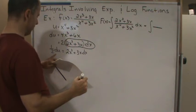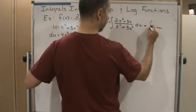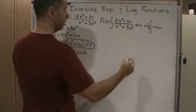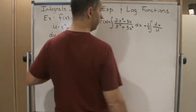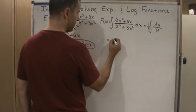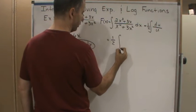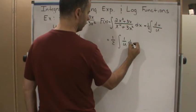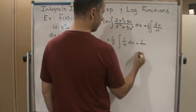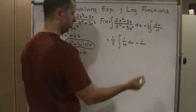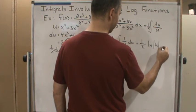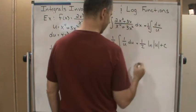And my top becomes 1 half du, so I'm going to have a half out here. And I get du over u, which is the same as 1 half the integral of 1 over u du. Well what's the integral of 1 over u? It's the natural log of the absolute value of u. So it's going to be 1 half times the natural log of the absolute value of u plus c.